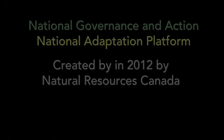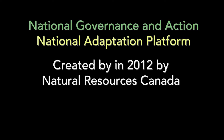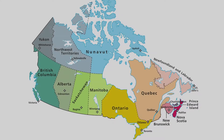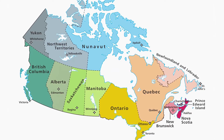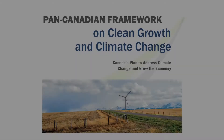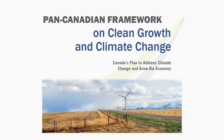The National Adaptation Platform is one example of national-level coordination. Created by Natural Resources Canada in 2012, the platform is a mechanism to promote collaboration between a broad range of actors, including government, industry, Indigenous peoples, and professional organizations, with a shared interest in making Canada more climate resilient. This platform's structures include a plenary, the coordinating forum, and a series of sector-specific working groups. In 2016, the Pan-Canadian Framework on Clean Growth and Climate Change was established, which included specific national-level adaptation priorities and areas for future action. This agreement established a structure for Canada's provinces and territories to collectively advance and measure progress towards national-level adaptation priorities.